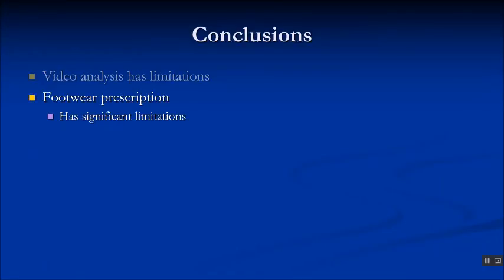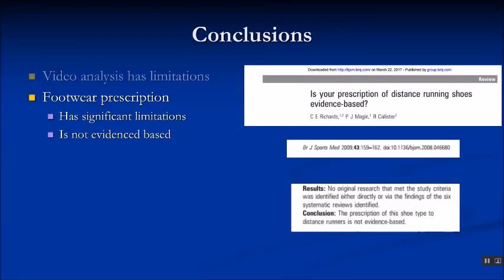In conclusion, video analysis is useful but has limitations, particularly as it cannot measure rotation. Footwear prescription is rife with problems — a review of the literature showed absolutely no evidence base to support the commonly used methods for prescribing running shoes. In this case some may have considered a stability shoe given the position of the shoe on video, but our evaluation clearly showed that this position is a combination of what's happening around the hip and pelvis, combined with the unique loading pattern within that shoe. It's a forefoot strike with no heel contact, so a stability shoe would have had minimal benefit.